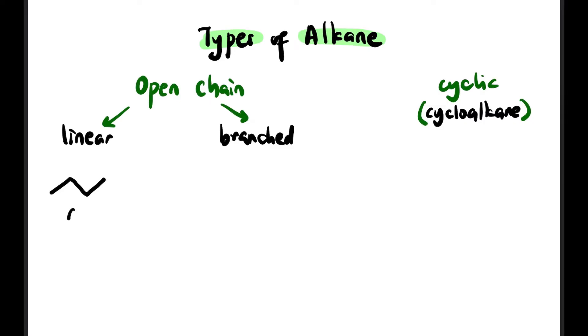Like this, C4H10. This is C4H10, or it can be branched like this: one, two, three, and then it has a branch. This is also C4H10. So these are two types of open chain: linear or branched.